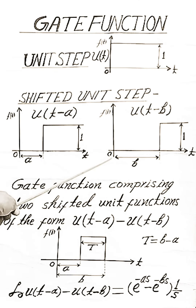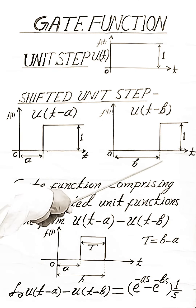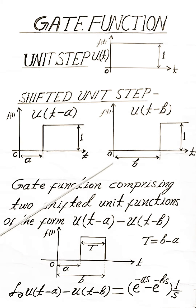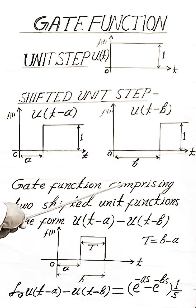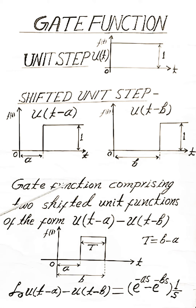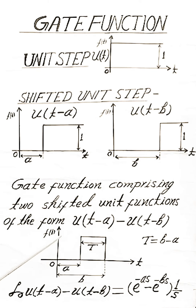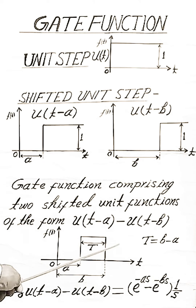The gate function comprises two shifted functions: U(t-A) minus U(t-B), which equals the gate function. The time period of the gate function is equal to B minus A.